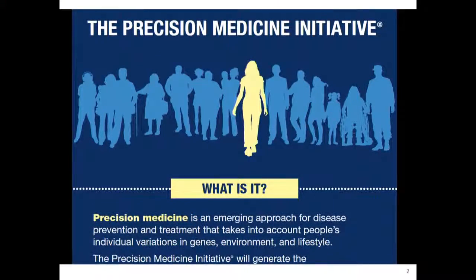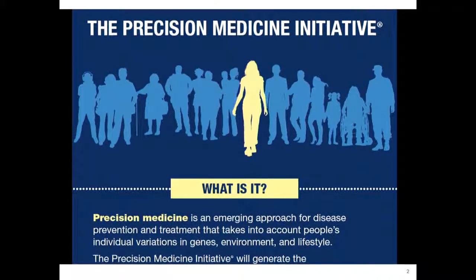I'll try to first define what precision prevention is. Those of you who have seen the Precision Medicine Initiative and the Precision Medicine Cohort announced by Obama and Francis Collins will know it's an emerging approach for disease prevention. Today's focus is on prevention that takes into account individuals' variation in genes, environment, and lifestyle.